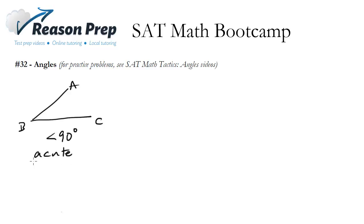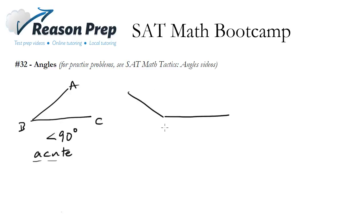A way to remember acute is that something cute may be really tiny and small, while an acute angle is going to be less than 90 degrees. Whereas an obtuse angle is greater than 90 degrees — you can remember this because obtuse kind of sounds like the word obese.